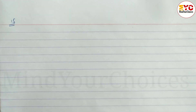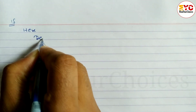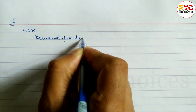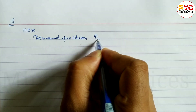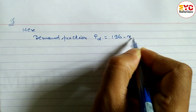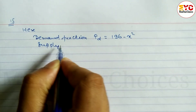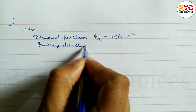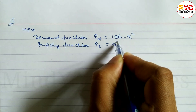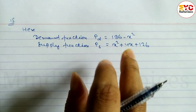Question number 15. Here, the Demand Function: PD is equal to 196 minus x squared. The Supply Function: PS is equal to x squared plus 4x plus 126.